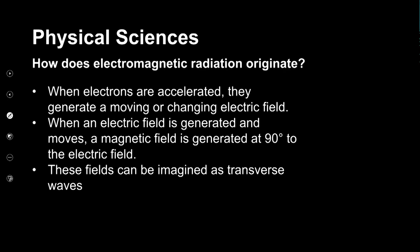When electrons are accelerated, they generate a moving or changing electric field. When this electric field is generated and moves, it is able to cause a magnetic field to be generated as well — if you ever move a charged object you immediately induce a magnetic field at 90 degrees to the electric field associated with that charged object. To help us visualize how electromagnetic waves appear, you can imagine the changes in each field as transverse waves.